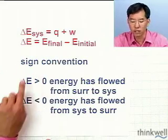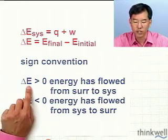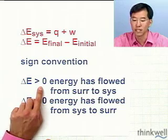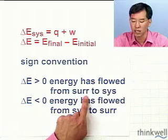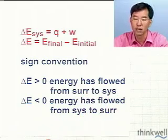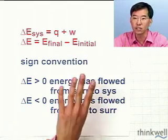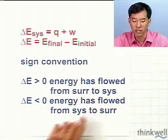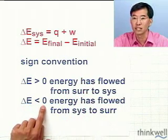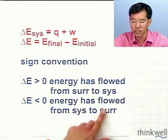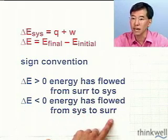If this is true, then you can recognize that if the change in internal energy is greater than zero, then energy has flowed from the surroundings to the system. So energy has gone into the system from the surroundings. And conversely, when the change in internal energy is less than zero, then what it means is that energy has flowed from the system into the surroundings.